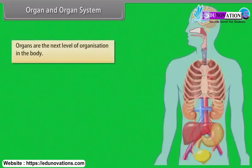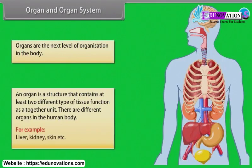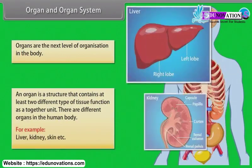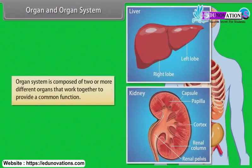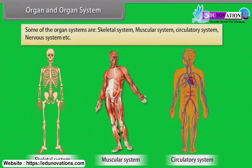Organs are the next level of organization in the body. An organ is a structure that contains at least two different types of tissue functioning as a unit together. There are different organs in the human body, for example liver, kidney, skin, etc. An organ system is composed of two or more different organs that work together to provide a common function. Some of the organ systems are skeletal system, muscular system, circulatory system, nervous system, etc.